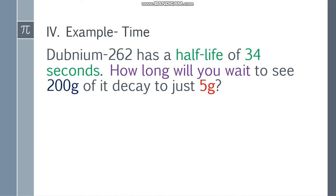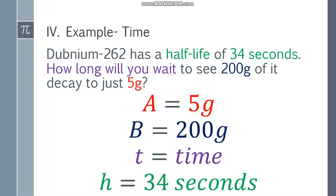Let's have the next example. Paano pag time naman ang hinahanap? Dubnium-262 has a half-life of 34 seconds. How long will you wait to see 200 grams of it decay to just 5 grams? So yung 200 grams mo, ilang segundo daw hintay mo para maging 5 grams na lang siya. So time ang hinahanap natin. So lagi mo yung given. A is equal to 5 grams, B is equal to 200 grams, T will be the time, and H will be 34 seconds.